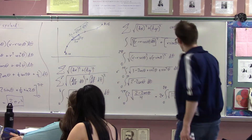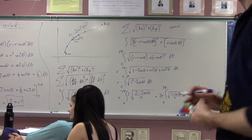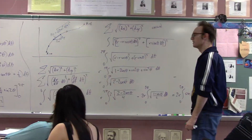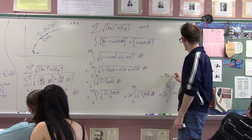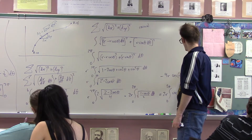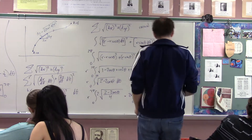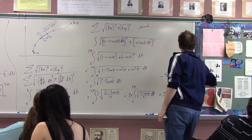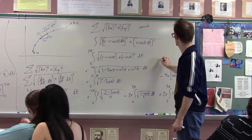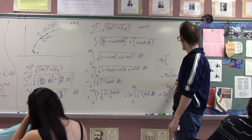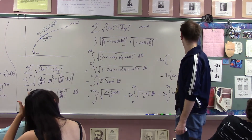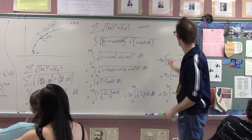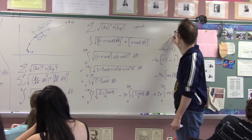So the arc length is 2r times the integral from 0 to 2π of sin(θ/2) dθ. The antiderivative of sin(θ/2) is negative 2·cos(θ/2), so this becomes 4r times [negative cos(θ/2)] from 0 to 2π. Evaluating: negative 4r times [cos(π) minus cos(0)] = negative 4r times [negative 1 minus 1] = negative 4r times negative 2 = 8r. The length of one arch of the cycloid is 8r — eight radii!